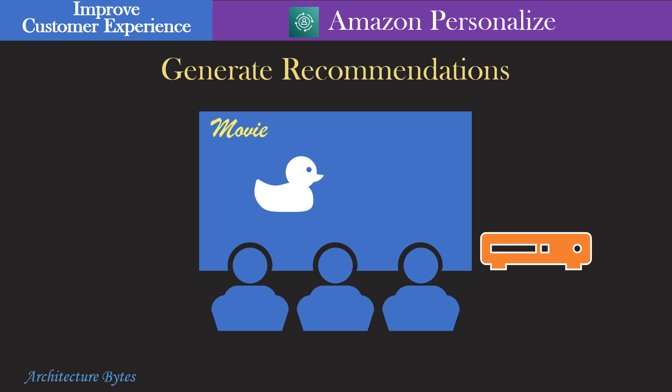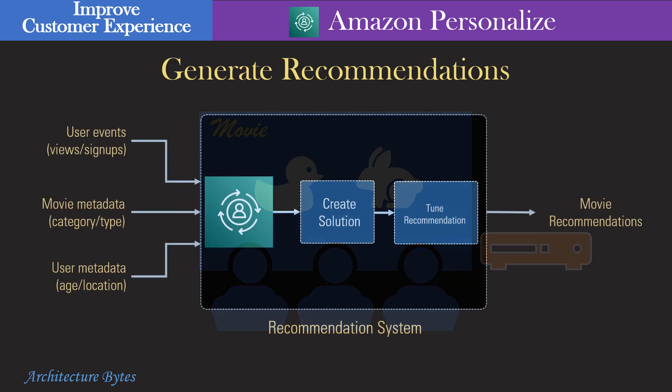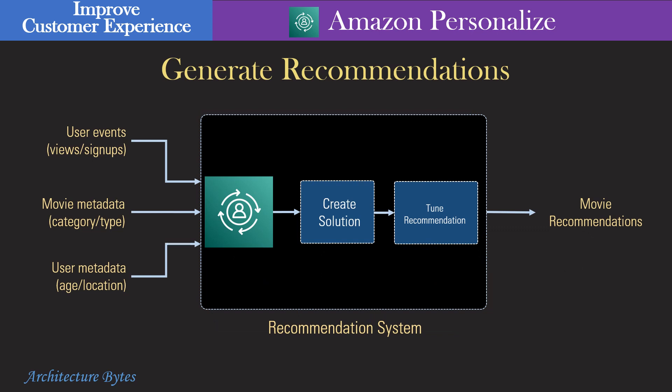Do you need to personalize content for your users? For example, recommend movies to your subscribers on an OTT platform? Amazon Personalize can help. Amazon Personalize can generate recommendations based on relevant data like past user interactions. A customized personalization engine can be set up quickly with no machine learning expertise needed. For example, an OTT platform could recommend movies to users using Amazon Personalize based on user events, movie metadata, and such.